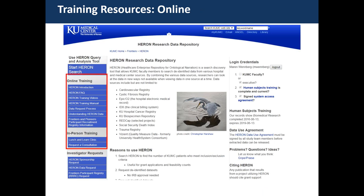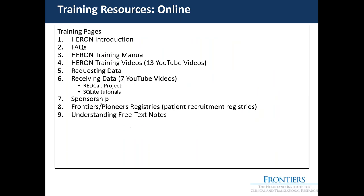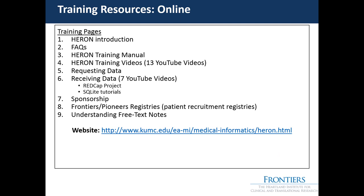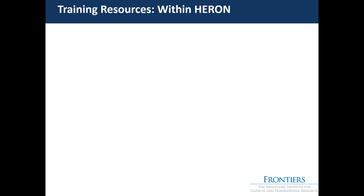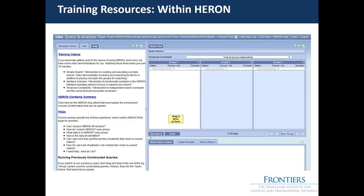We also have a lot of online training accessible for people within KU and outside of KU, linked on our Heron website. Training pages include Heron instructions, the Heron training manual, YouTube videos, how to request and receive data, sponsorship, registries, and understanding free text. Our YouTube channel is KU Medical Informatics. We've also incorporated training resources within Heron itself — a help section with links to training videos and FAQs, plus the standard i2b2 help. Not all i2b2 instances have this built out, but we can show you how to add it.